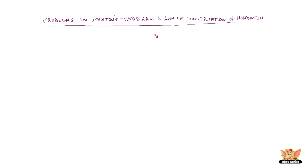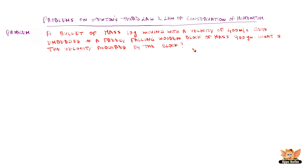Problems on Newton's third law and law of conservation of momentum. A bullet of mass 10 grams moving with a velocity of 400 meters per second gets embedded in a freely falling wooden block of mass 900 grams. What is the velocity acquired by the block?